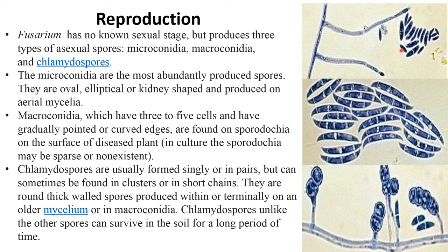Microconidia are the most abundantly produced spores. Asexual reproduction only takes place when there is a favorable condition. Microconidia are oval, elliptical, or kidney-shaped and are produced on aerial mycelium.